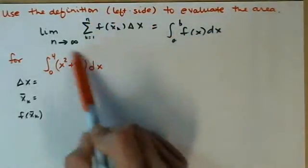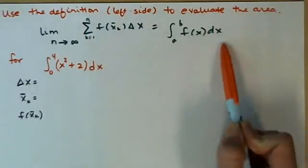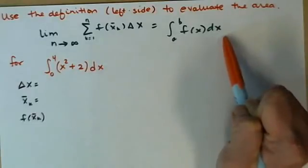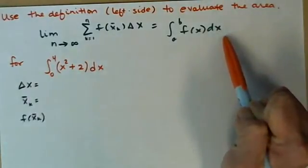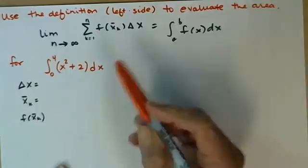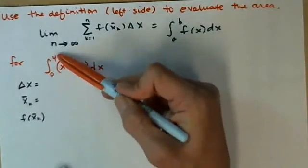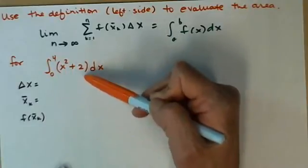Remember this as n goes to infinity is the same as the value of our definite integral, area under the curve. So the function we are going to use for our example, we are going to go from 0 to 4 for x squared plus 2 dx.